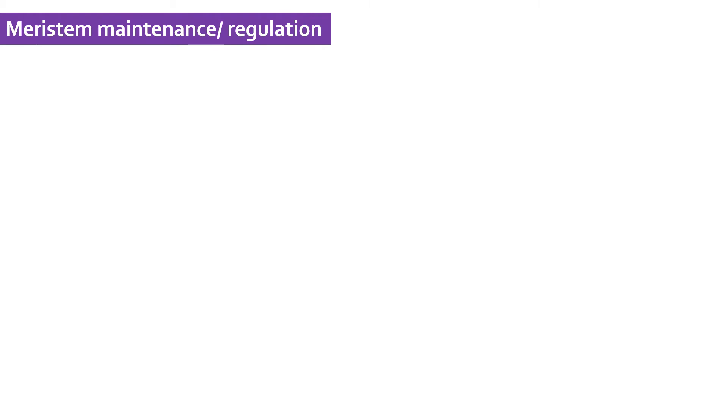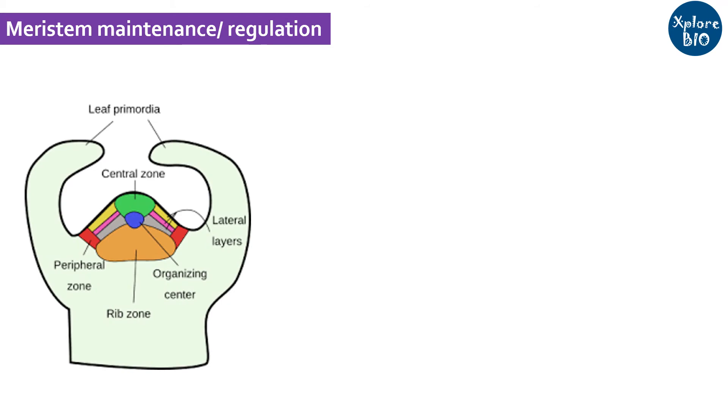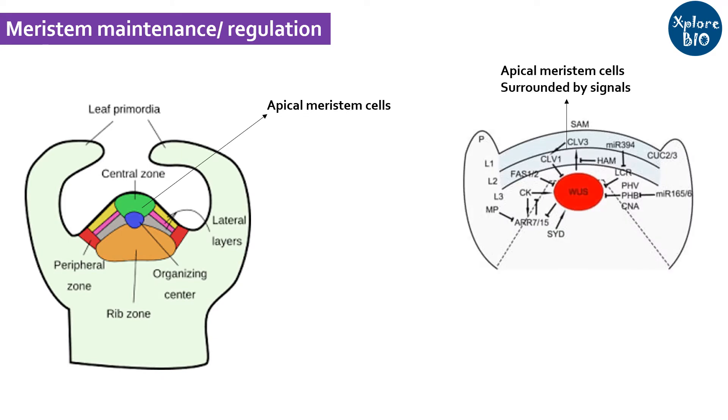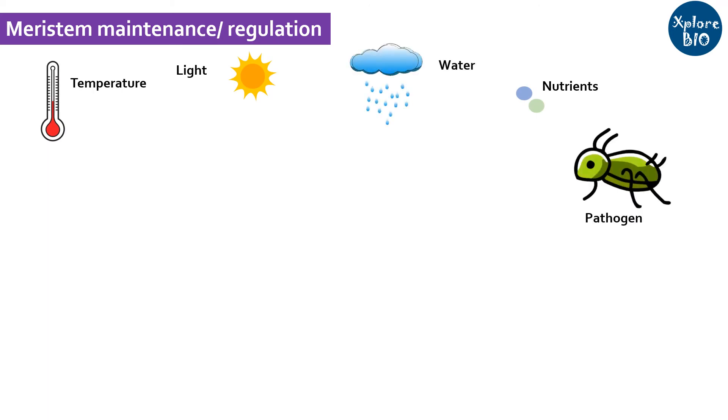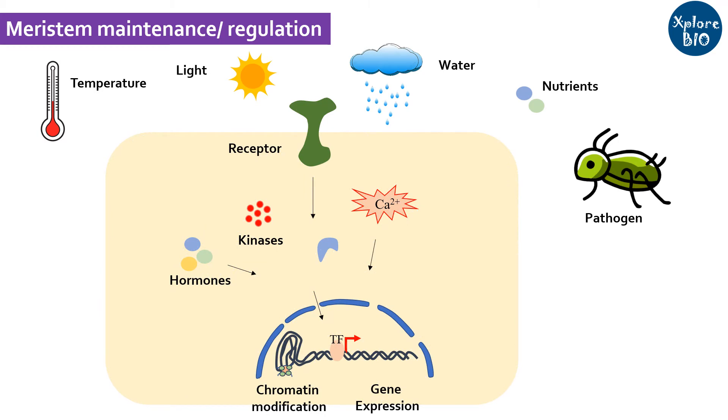We now know that meristem or stem cells have the innate ability to divide. The division of meristem cells is a highly regulated and coordinated process. Meristem cells are present in specific niche or locations which are surrounded by meristem maintenance signals. And as the cell displaces or moves away from these signals, they slowly lose their meristematic potency to divide and undergo specialization depending upon the surrounding signals. A cell senses its surrounding signals such as nutrient, temperature, water, pathogen etc.